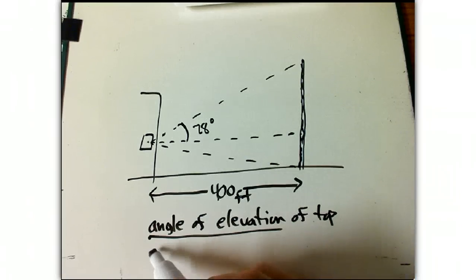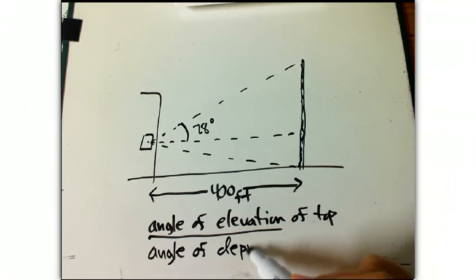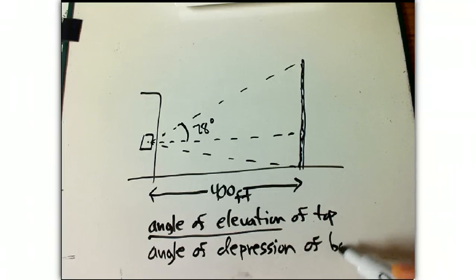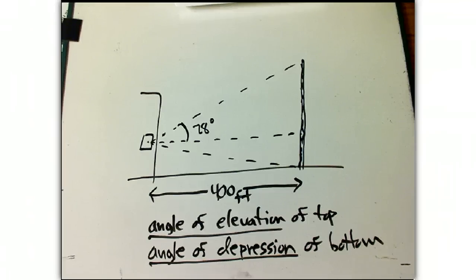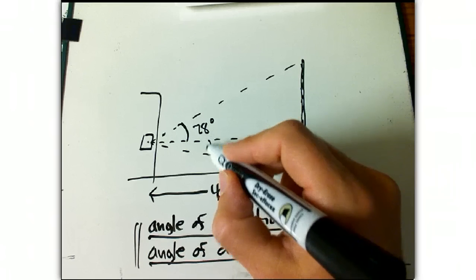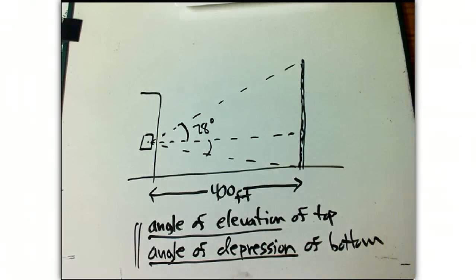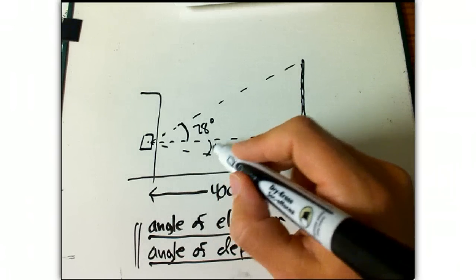We also measure the angle of depression, which always sounds to me like a sort of alternative country folk band, of the bottom. Again, really important, that's measured from the horizontal. It's not an angle that you choose to put in. Very often people will measure these to the vertical just because it feels right. Well, you can't do that. It's measured from the horizontal, and let's say that is known to be 10 degrees.